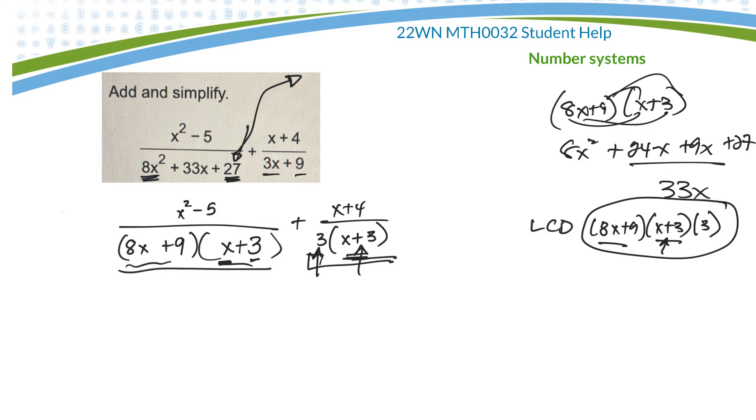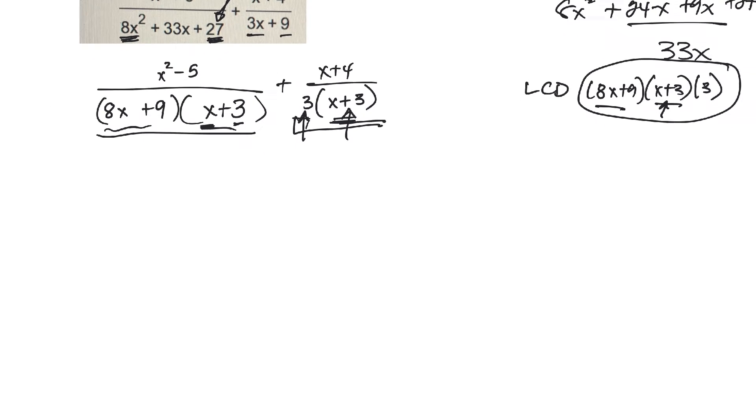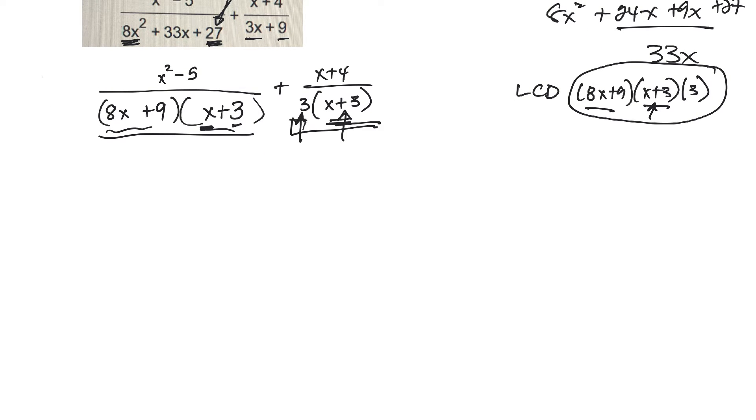So that will be my lowest common denominator. So I'll rewrite this first one, x squared minus 5 over 8x plus 9 and an x plus 3. Now, in order to be the common denominator, I have this.